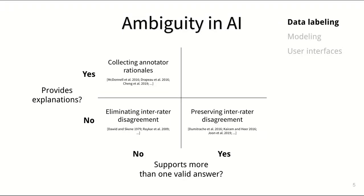In data labeling, ambiguity typically shows as annotator disagreement. Most methods treat it as noise in the signal and aim to eliminate it when it arises. Some other work shows that it can be useful to collect rationales from humans to explain why they labeled data in a certain way.